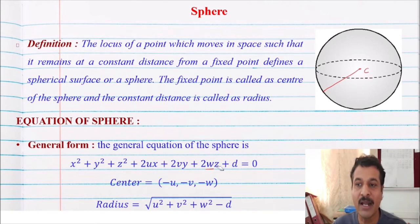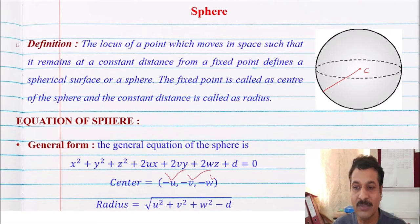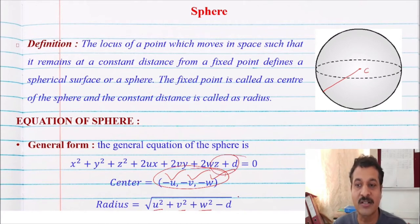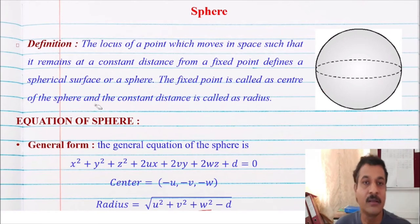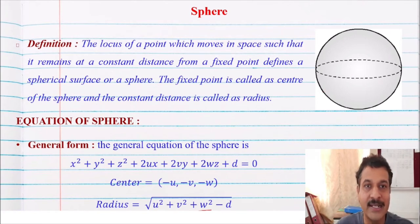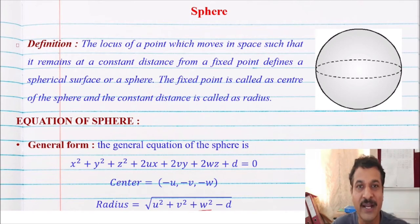Also remember how to find the radius of that sphere. Once we have the centre, the radius is the square root of (u squared plus v squared plus w squared minus d), where d is the constant term. This is the radius of that sphere. So you should know the general equation of the sphere, and from it how to find the radius and centre.